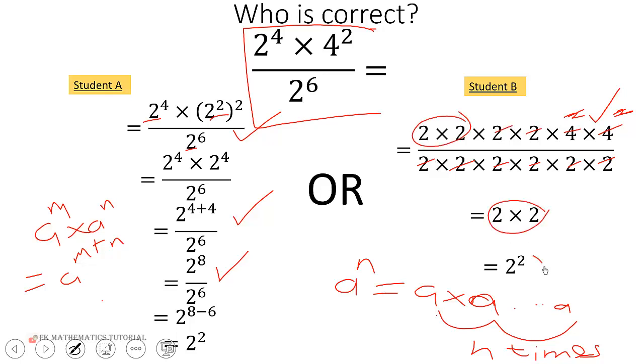So this one also at this point uses a exponent m over a exponent n is equal to a exponent m minus n. So I get 2 exponent 2.